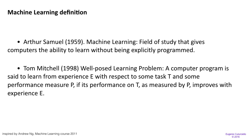A more rigorous definition: Arthur Samuel in 1959 said machine learning is a field of study that gives computers the ability to learn without being explicitly programmed. So you don't want to program every single possible instruction — if you see this, do that. That would be very tedious and time consuming, and we would never be able to predict all possible combinations of instances.